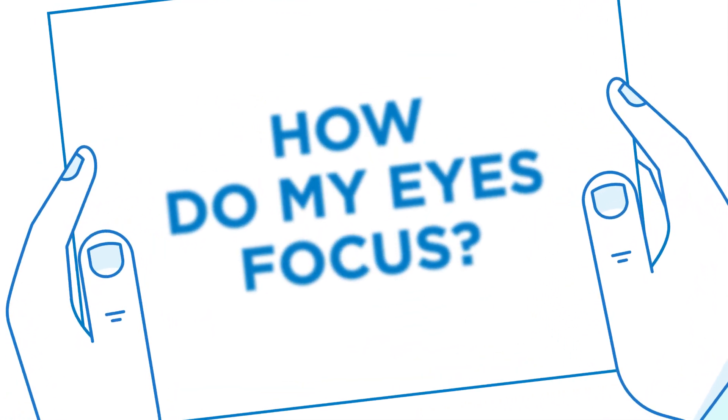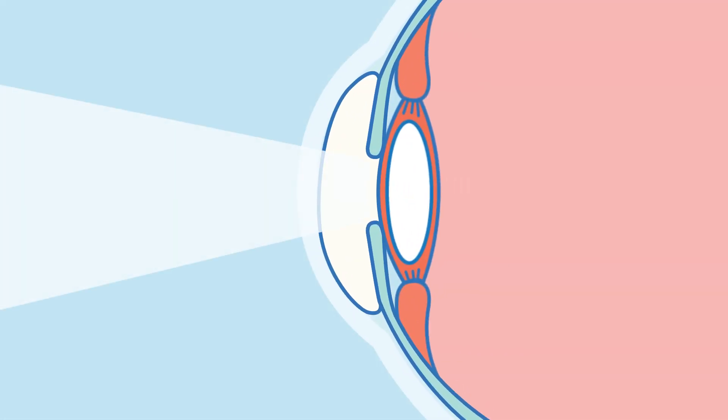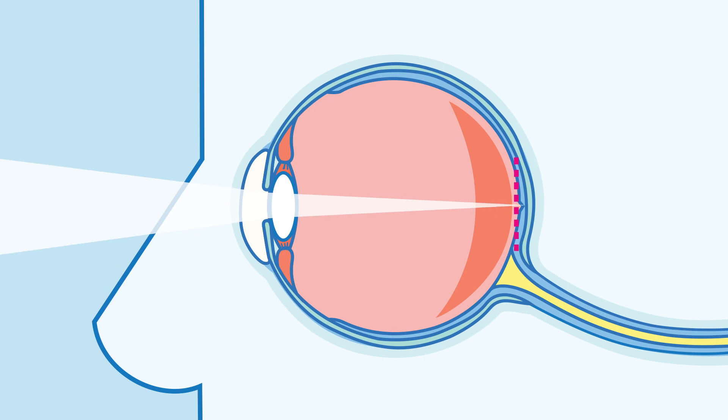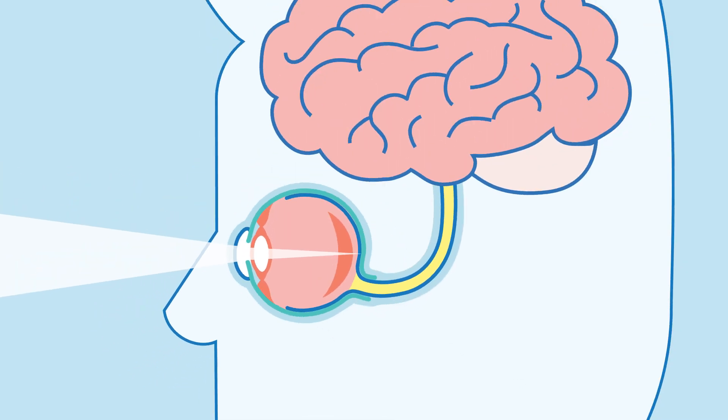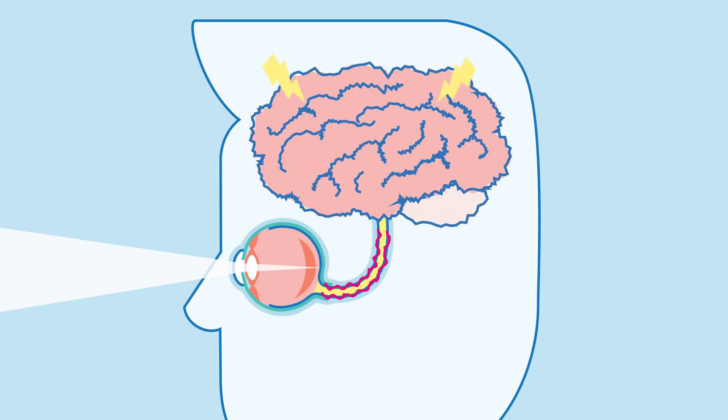How do my eyes focus? When you open your eyes, light enters through the cornea. It passes through your pupil to your lens, which changes in thickness depending on the distance, to focus the light onto your retina. The retina then works like camera film, converting the image into electrical impulses to be sent to your brain.